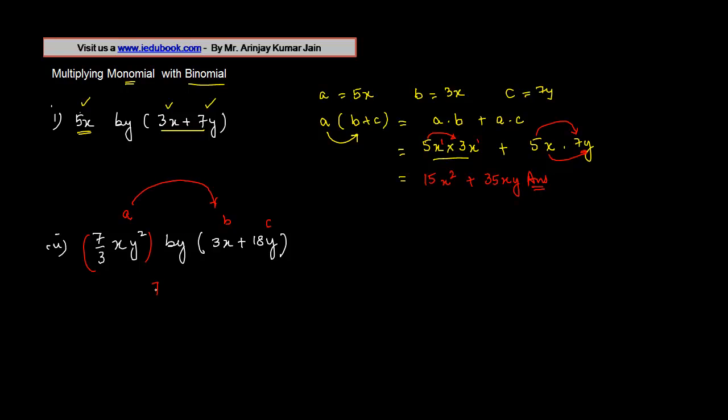Again the result will be what? a into b: so 7 upon 3 xy square into 3x, plus 7 upon 3 xy square, which is a into c, into 18y.